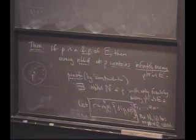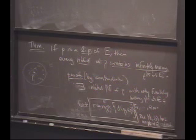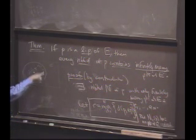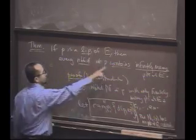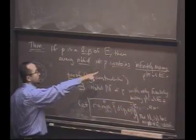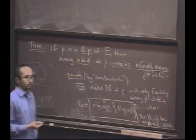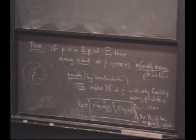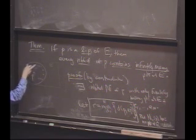Yes, Harris. She started the proof by taking the negation of what it is you're trying to show, which is: there is some neighborhood with only finitely many points. And once you have those finitely many points, you take the minimum distance from P to that point.